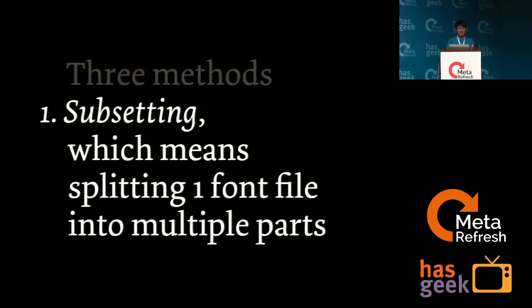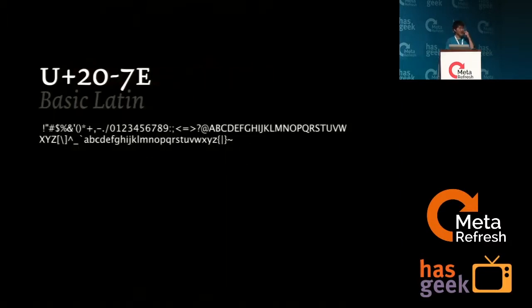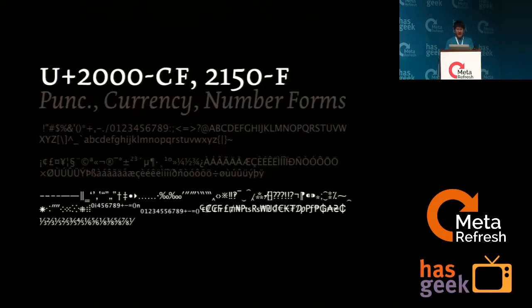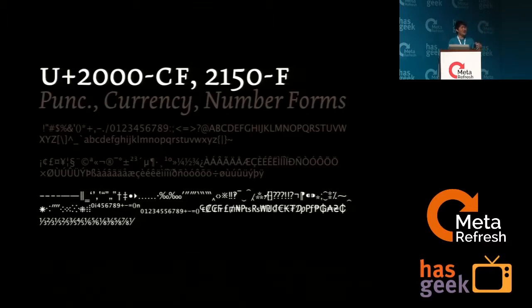Let's talk about subsetting. It means splitting one font file into multiple parts. You can split it logically based on Unicode ranges. Every font has a Unicode table — for example, the basic Latin character set has punctuation, uppercase, lowercase, and numerals; Latin-1 Supplement has diacritics, currency symbols, math symbols, and additional punctuation. We're going to split fonts into logical parts and just load the parts we need.